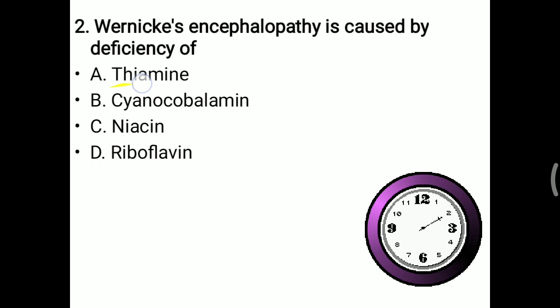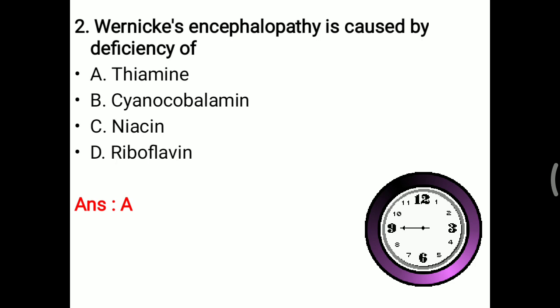Cyanocobalamin deficiency leads to pernicious anemia. Niacin is related to the 3D syndrome: dermatitis, dementia, and diarrhea. Riboflavin is related to angular stomatitis, glossitis, and cheilosis. So Wernicke-Korsakoff syndrome occurs in thiamine deficiency.